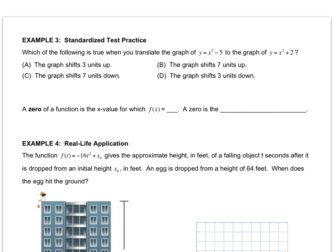For this example, it's important to know where you're starting from and where you're going to because the shift will change depending on your starting parabola. So we want to know which is true when you translate this graph, y = x² - 5, to the graph y = x² + 2. So we're starting with a graph that's 5 units below and we're going to a graph that's 2 units above.